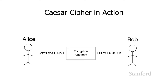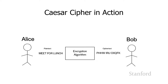Let's take a look at the Caesar cipher in action. Suppose the TAs are unhappy with how I'm running the class and they decide they're going to meet for lunch and plot a coup d'etat. They're concerned because they know I'm a tyrannical guy, so they're going to take their message — 'meet for lunch' — and encrypt it using the Caesar cipher. The M shifts to P, the E becomes H, the T becomes W, and so on, so 'meet for lunch' becomes 'PHHWIRU0XQFK'. We refer to the original text as plain text and the converted text as cipher text.